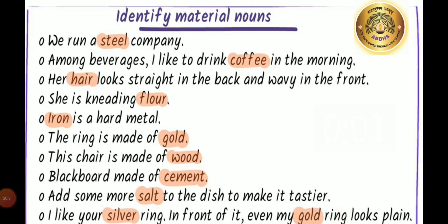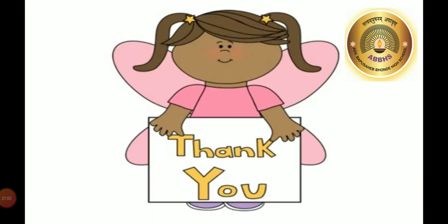The answers: in the first sentence, steel is the material noun. In the second, coffee. In the third, hair. Then flour, iron, gold, wood, cement, salt, silver and gold — all these are material nouns. So students, I hope you understood all types of nouns. Today we studied five types of nouns. Study it at home and practice it. Have a good day.